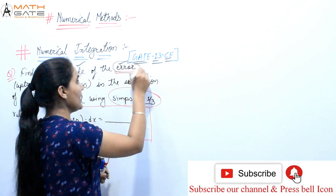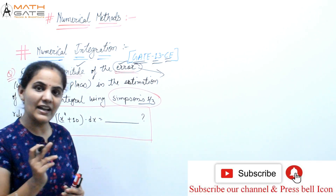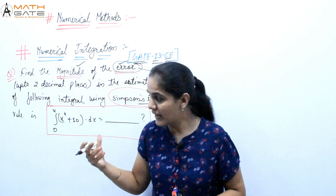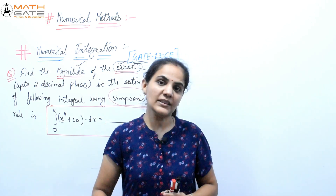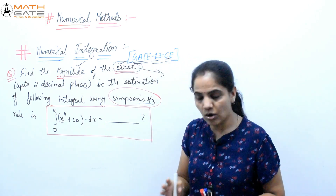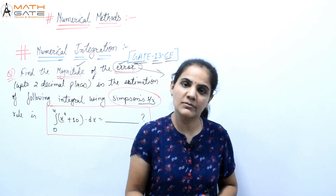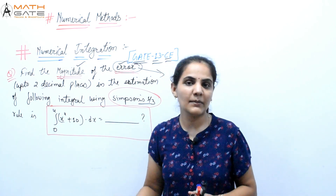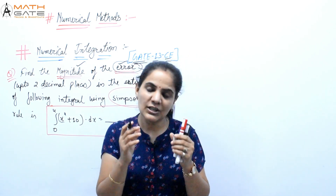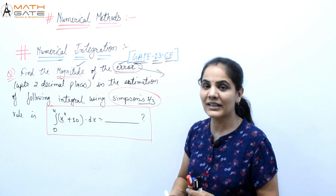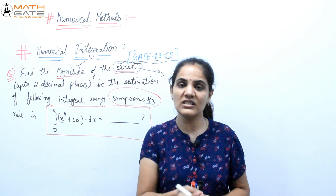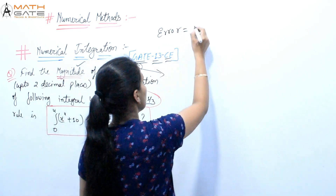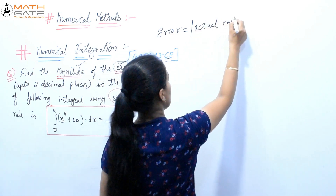So first let's talk about the error. The error concept is similar to what we discussed in Newton-Raphson: error means actual root minus approximate root. The actual root is found by the analytical integration method, and the approximate root is found by the numerical method, which is Simpson's here. The difference in values between these two methods will be our error, and the magnitude of the error means the absolute error.